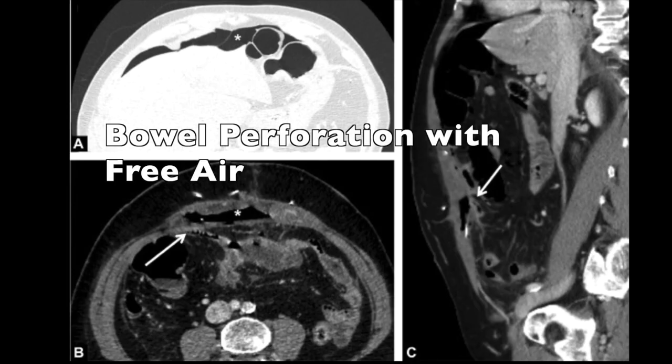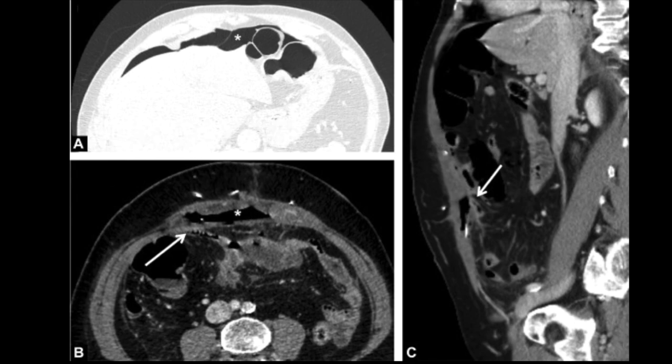Here's a case of small bowel perforation. This patient developed sudden pain a few days after abdominal wall repair using an intraperitoneal mesh, VentralEx. We see free air around the liver and close to the abdominal wall. Small bowel loops shown by the arrows are located adjacent to the abdominal wall. During surgery, two tiny holes were found in bowel loops.